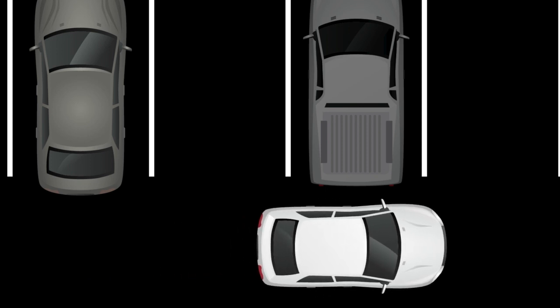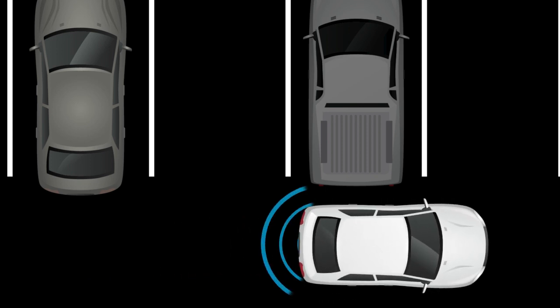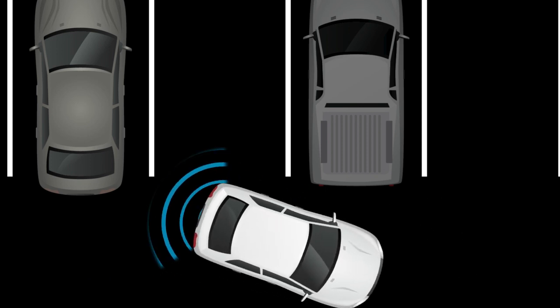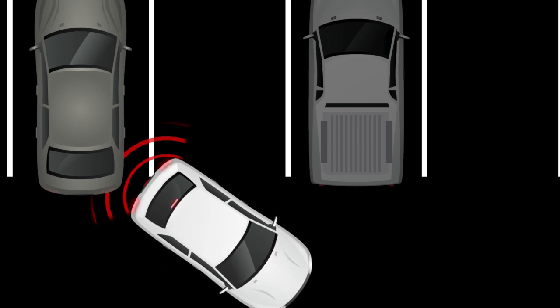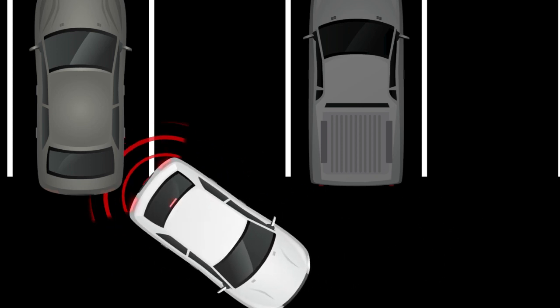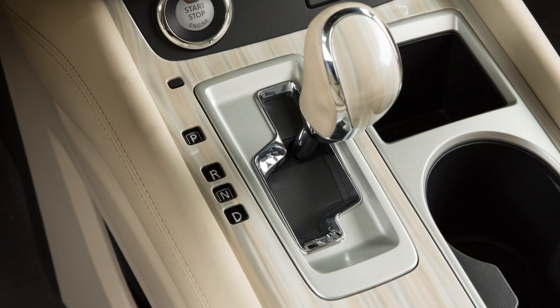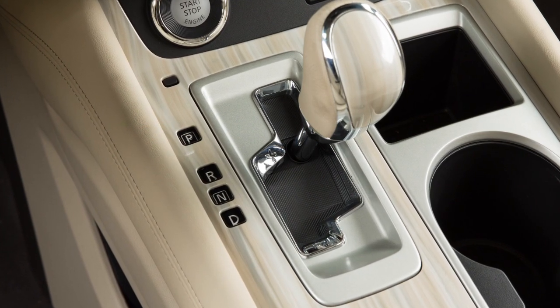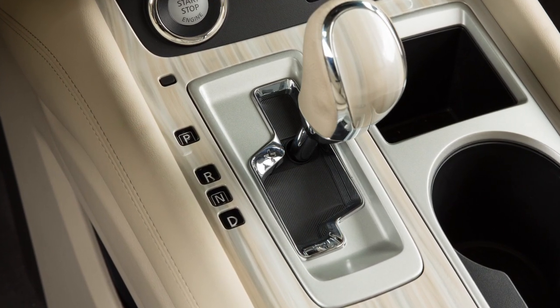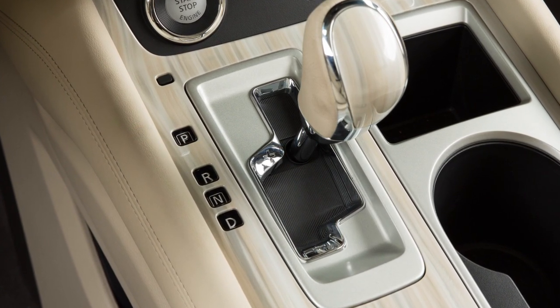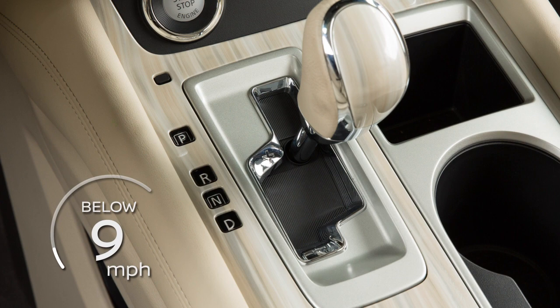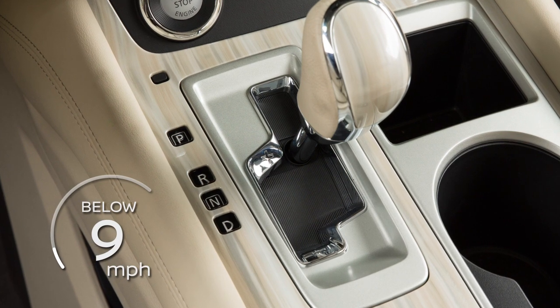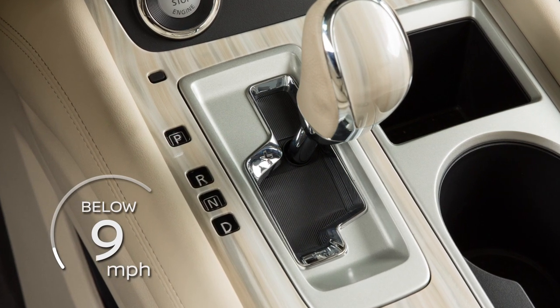The Rear Automatic Braking or RAB system can assist the driver when the vehicle is backing up. RAB operates when the shift lever is in the reverse position and the vehicle speed is less than approximately 9 miles per hour.